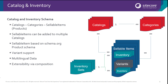Looking at the catalogue and inventory system, we've introduced the concept of sellable items as an item that's for sale on a site, for example a product. These can now be added to multiple catalogues and the scheme is based on the schema.org product schema. We have support for variants, catalogue categories, inventory sets. You can handle multilingual data and this is extendable via composition. We're going to have another video in this series which is going to specifically deep dive on these features and give you a very detailed overview of what's involved.